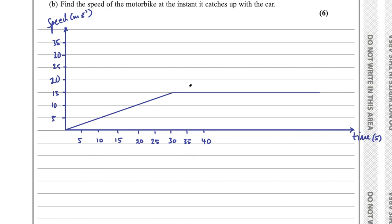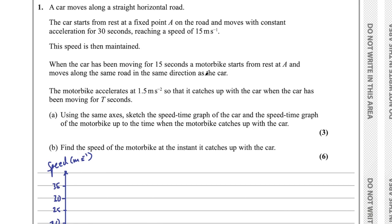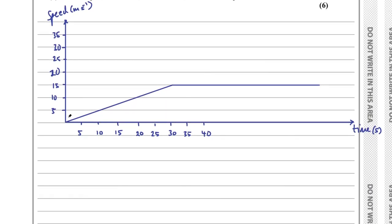For the motorbike, it starts from rest at t = 15 seconds and accelerates at 1.5 m/s². At 1.5 m/s² that's 15 m/s every 10 seconds, so the motorbike's line has a steeper gradient than the car's. If we go across 10 seconds on the x-axis, we go up 15 on the y-axis.